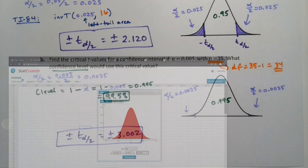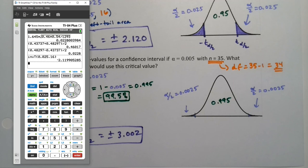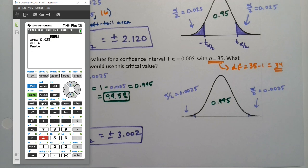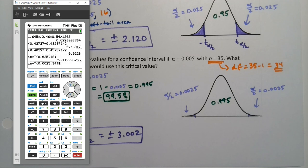If I use the calculator to get that same bit, I would do inverse T. So second distribution, inverse T, and I would change this to 0.0025 and make it 34 because you have to use alpha over 2, and then your degrees of freedom.